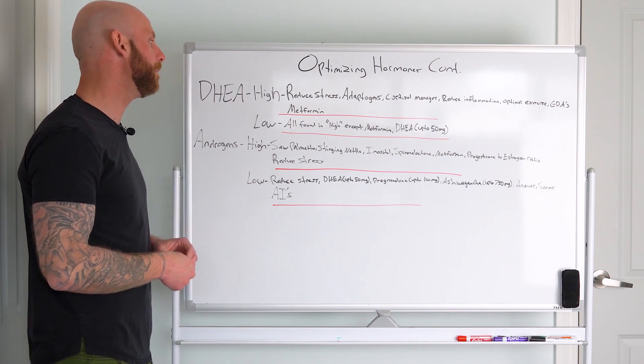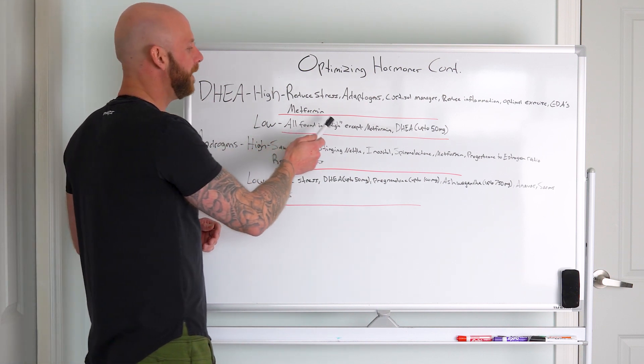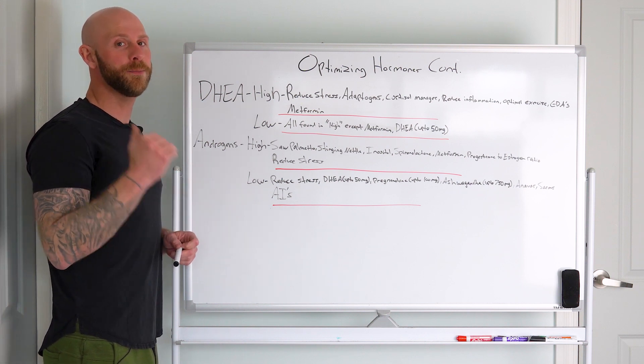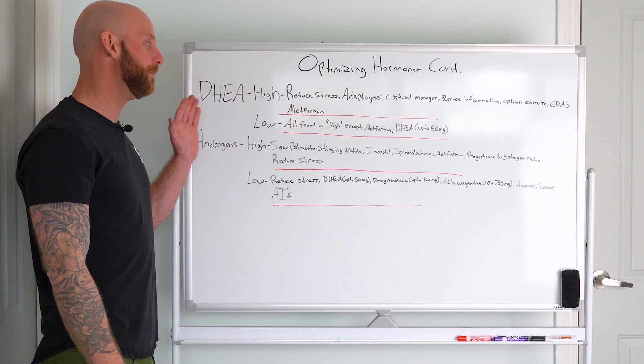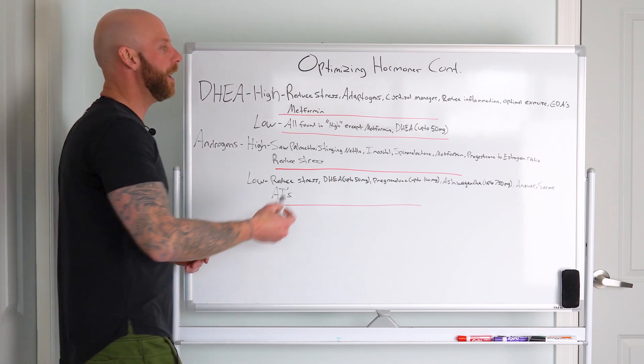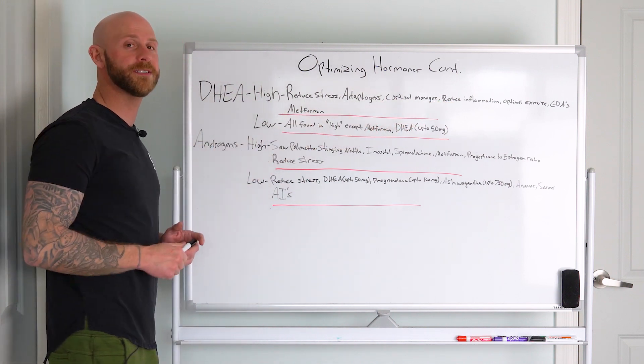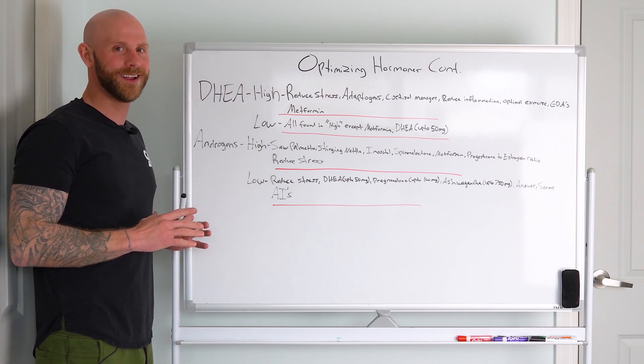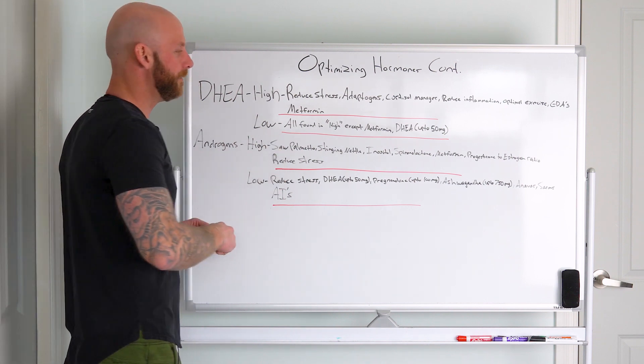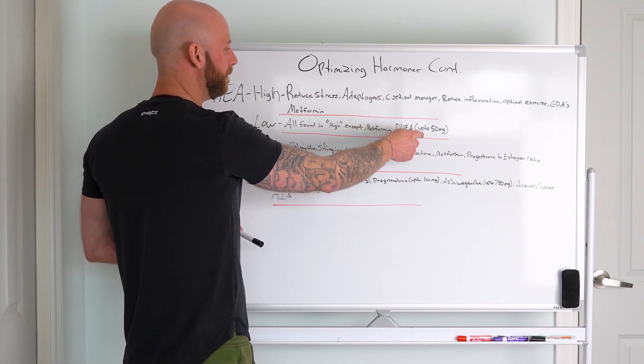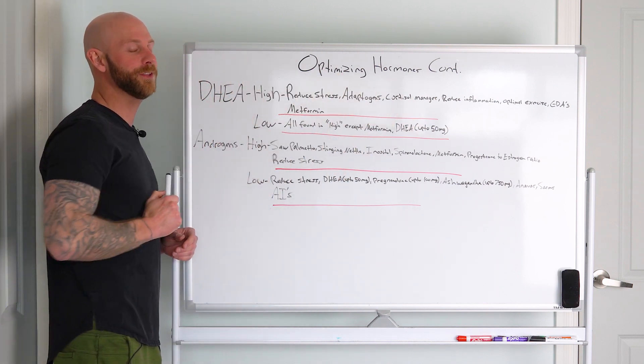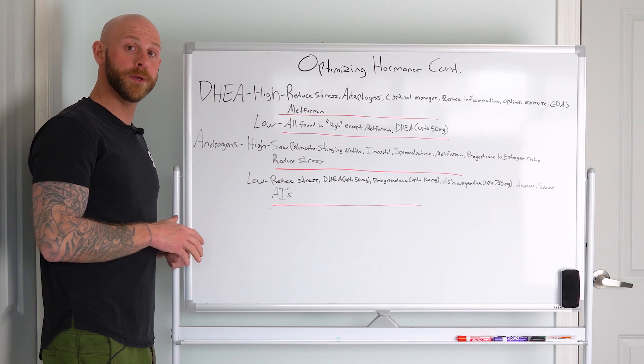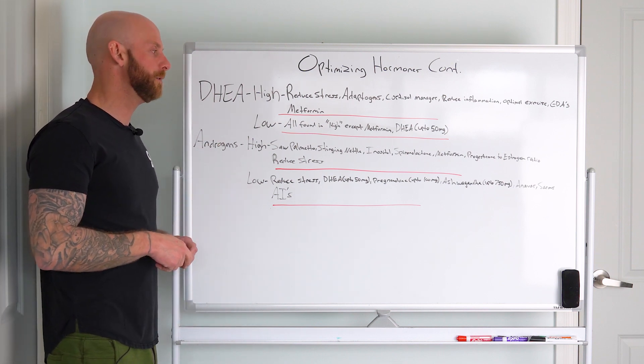Now low - all found in high except metformin. Reducing stress can help increase DHEA. Remember, primarily produced by the adrenals, so if they're so busy producing cortisol they're not going to be able to produce a lot of DHEA. Addressing all of these that you see in the high can also help with the symptoms of low. This is why labs are so important - you need to see where everything is at so you can make that right choice. And then if you have your labs, you can supplement DHEA if it's low, only if your androgens are low. Remember, you can have low DHEA but high androgens. So have your labs, and if you are a perfect candidate for that, you can supplement up to 50 milligrams of DHEA.